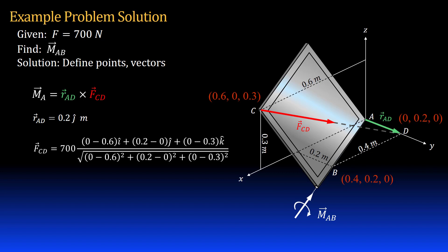The force vector F_CD is equal to its magnitude 700 newtons times a unit vector from C to D. I get the unit vector by finding a position vector from C to D and dividing the position vector by its magnitude. I get negative 600i, 200j and negative 300k newtons.